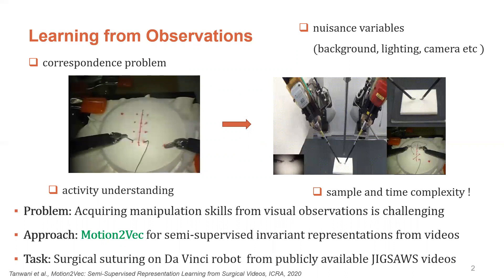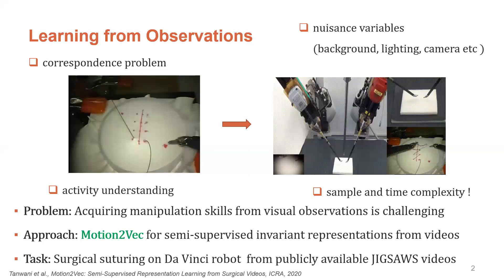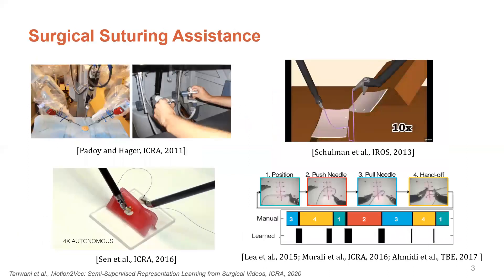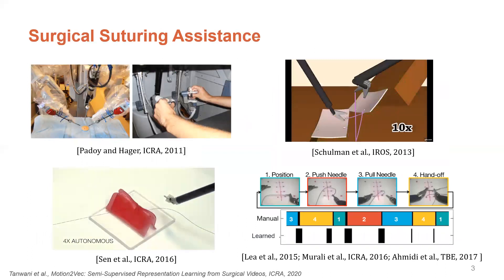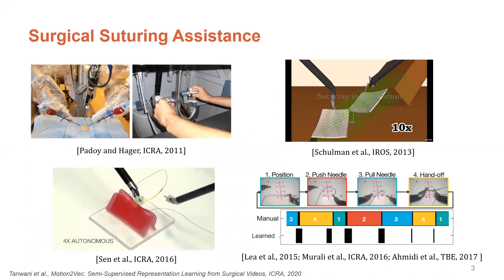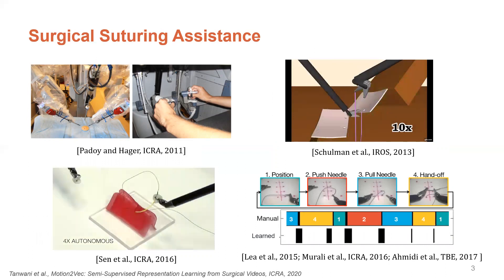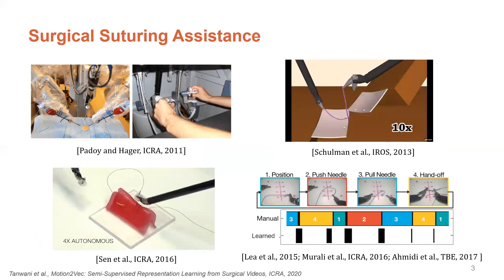We show its application to surgical suturing from publicly available videos in the Jigsaws dataset. Surgical suturing automation has been studied in several contexts such as collaborative human-robot interaction, trajectory transfer via non-rigid registration and simulation, needle path planning, and action segmentation. In this work, we apply the Motion-to-Vec approach to infer action segments and end-effector poses on the DaVinci robot arms from the suturing videos of the Jigsaws dataset.